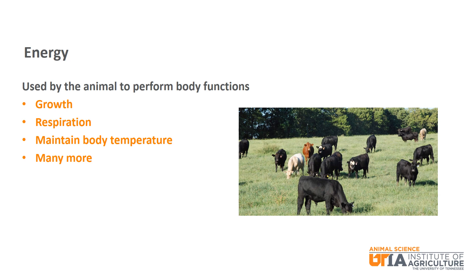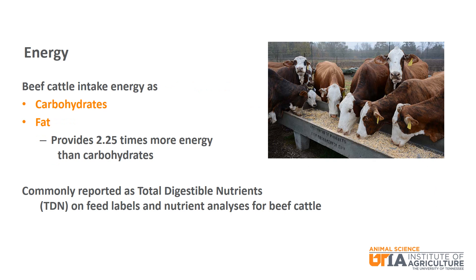The first is energy. Energy is used by the animal to perform many body functions, such as growth, respiration, and maintaining body temperature. Beef cattle will consume energy in two forms: as carbohydrates and as fat. It is important to note that fat provides 2.25 times more energy than carbohydrates. Energy is commonly reported as total digestible nutrients, or TDN, on feed labels and analyses as well as for formulating rations for beef cattle.